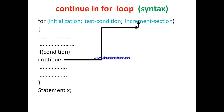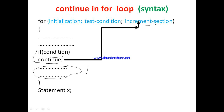Now let us understand the syntax of the continue statement when used inside the for loop. The for loop has an initialization, test condition, and increment section. Inside the body of the loop, continue is written. Continue will be executed only when the if condition is satisfied. If the condition is not satisfied, continue will not be executed. When continue is executed, the next part of the loop body is skipped, and control goes to the increment section.